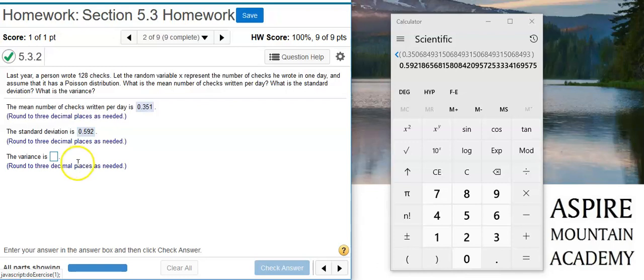And finally, we're asked to find the variance. The variance, by definition, is the standard deviation squared. Well, when I square this number, which I got from taking the square root of this number, I'm just going to get this number back.